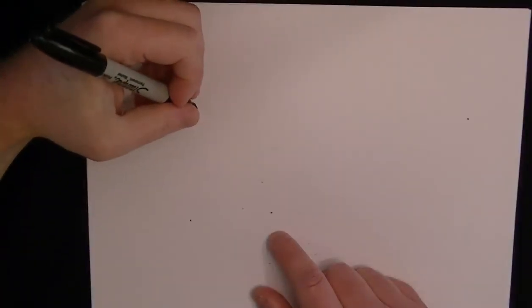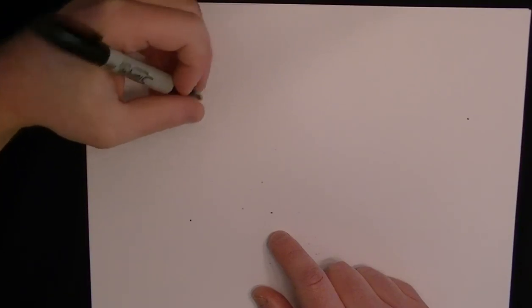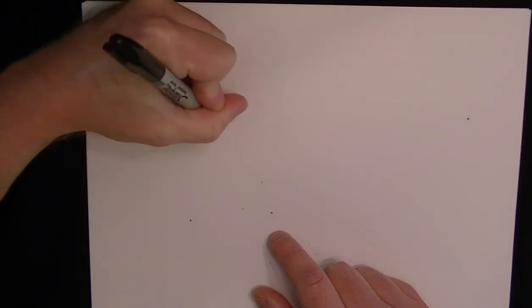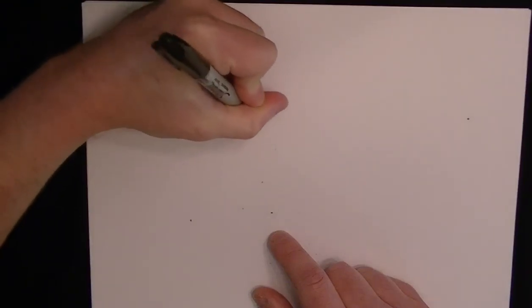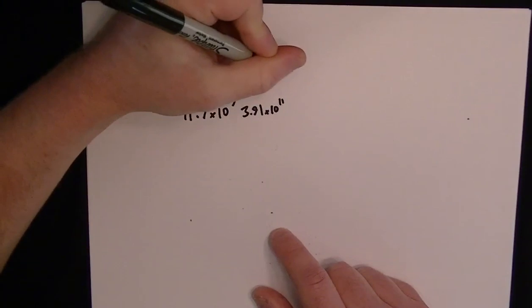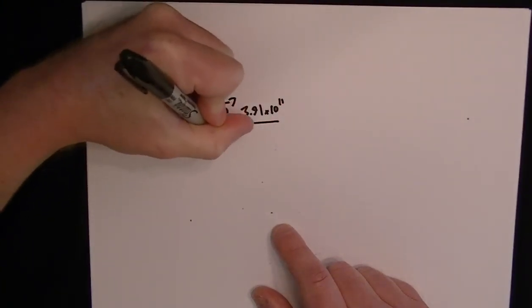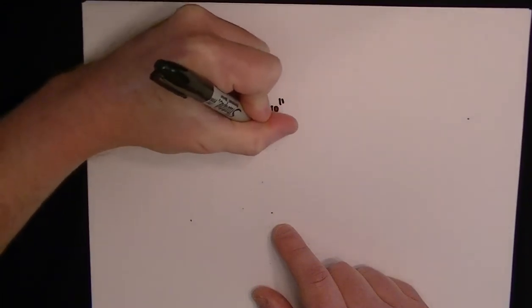We've got to simplify an expression and get it into a format using scientific notation. So the expression is 41.7 times 10 to the negative 7 times 3.91 times 10 to the 11, and that's divided by 22.15 times 10 to the minus 2.